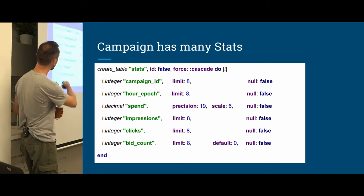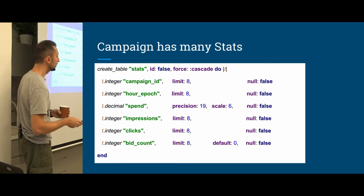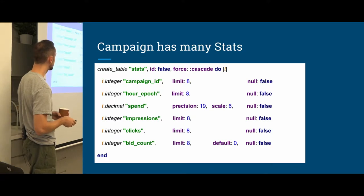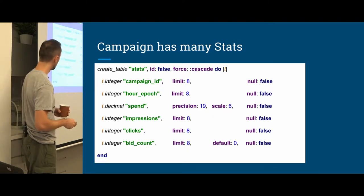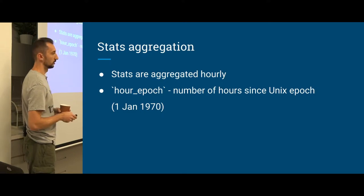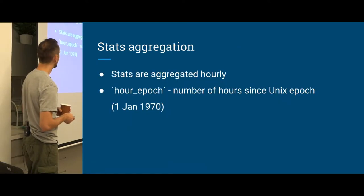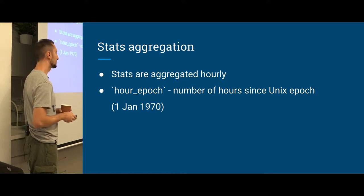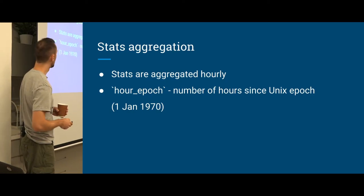We have four possible metrics we want to track: how much we spent on the campaign, how many impressions happened, how many clicks, and bid count — how many times we actually tried to bid but didn't win. We aggregate our stats hourly, and this is where our epoch comes in. Our epoch is just the number of hours since Unix epoch — same as timestamps in seconds, but for hours.